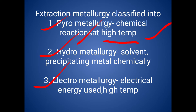In hydrometallurgy, we use a liquid called a solvent. We soak the ore in this solvent, and through precipitation the gangue particles are separated. This method is called hydrometallurgy. A good example is gold extraction in gold jewellery shops.